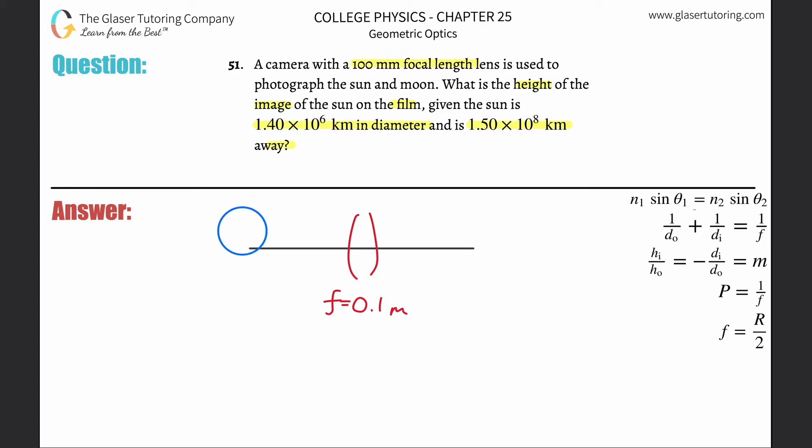They tell us the diameter of that sun. By the way, the diameter is not only horizontal but also vertical, so this diameter actually does represent technically the height of the sun. This is now in kilometers, we need that in meters. If you convert it, it's 1.40 times 10 to the 9th meters.